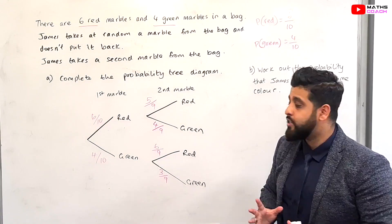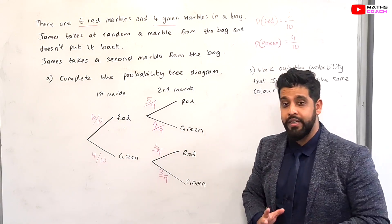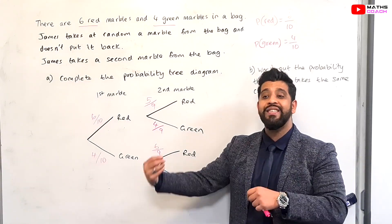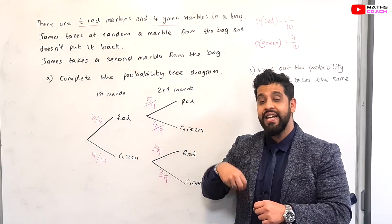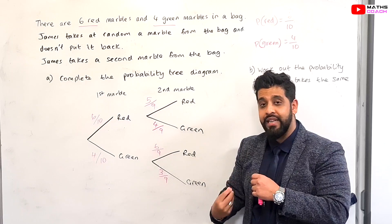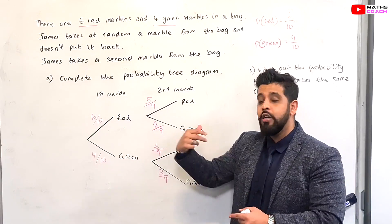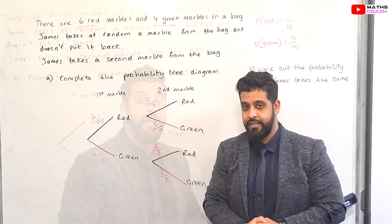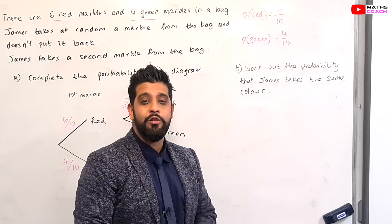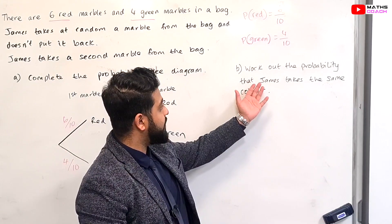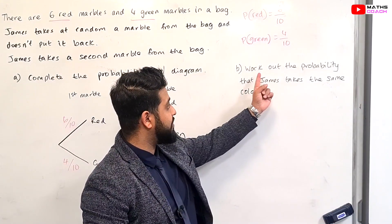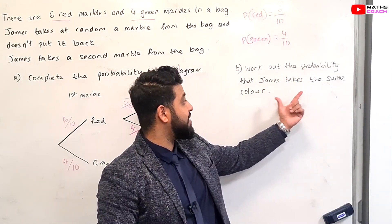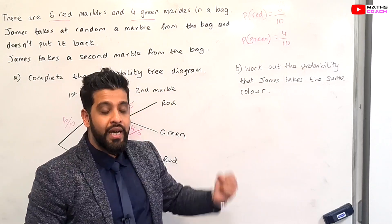So this is what is meant by conditional probability — where the probability of the second event is impacted and changes according to what happened in the first event. Now let's look at part B: work out the probability that James takes the same colour.